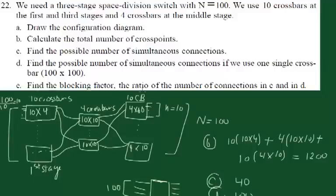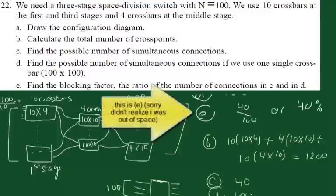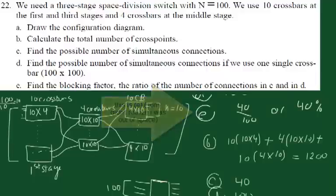Part E asks us to find the blocking factor, which is the ratio of the number of connections in C to those in D. In C we had 40 simultaneous connections and in D we had 100. So the ratio is 40 to 100 — you can express it as 40%. That's it for this example; if you have any questions feel free to post them.